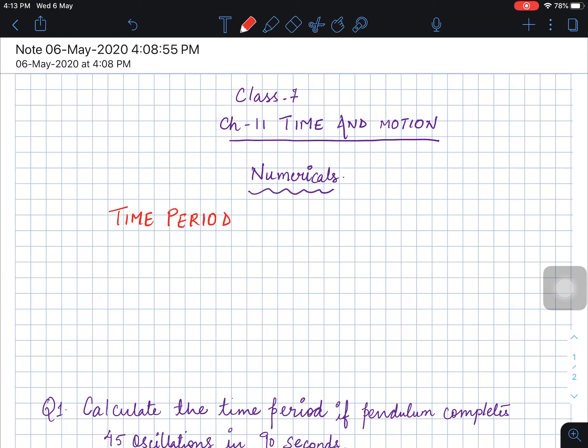First let us understand what is time period. This is your simple pendulum. This is the thread. This is the bob. Bob is your metal ball.